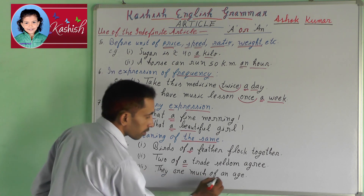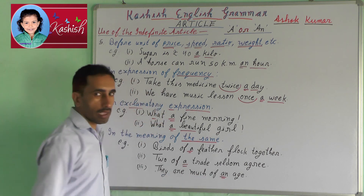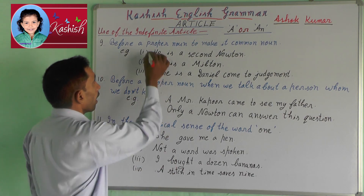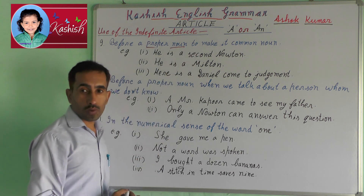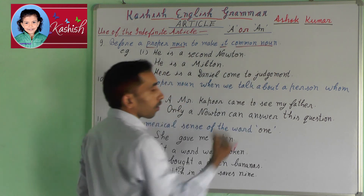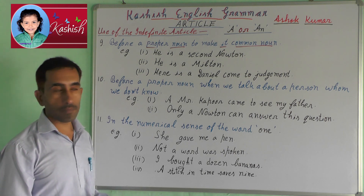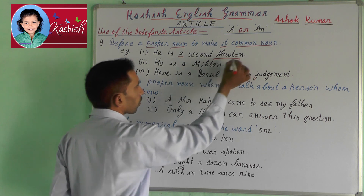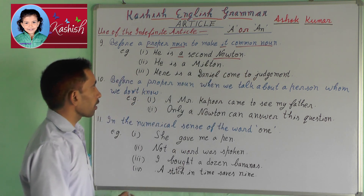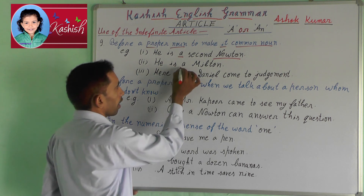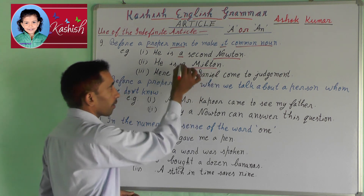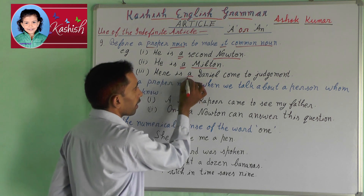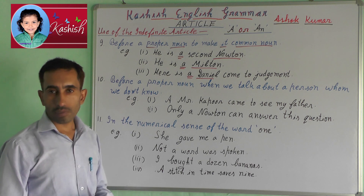They are much of an age. Ninth, before a proper noun to make it a common noun. For example: he is a second Newton; he is a Milton; here is a Daniel came to judgment.